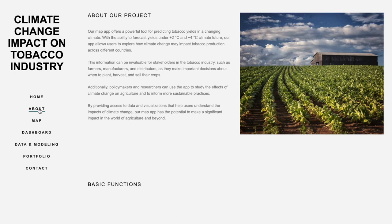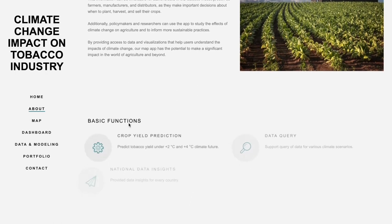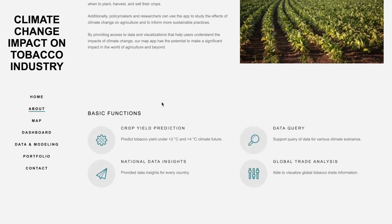By providing access to data visualization that helps users understand the impact of climate change, our web map has the potential to make a significant impact in the world of agriculture. With our map, we have basic functions such as crop yield prediction, data query, national data insights, and global trade analysis.